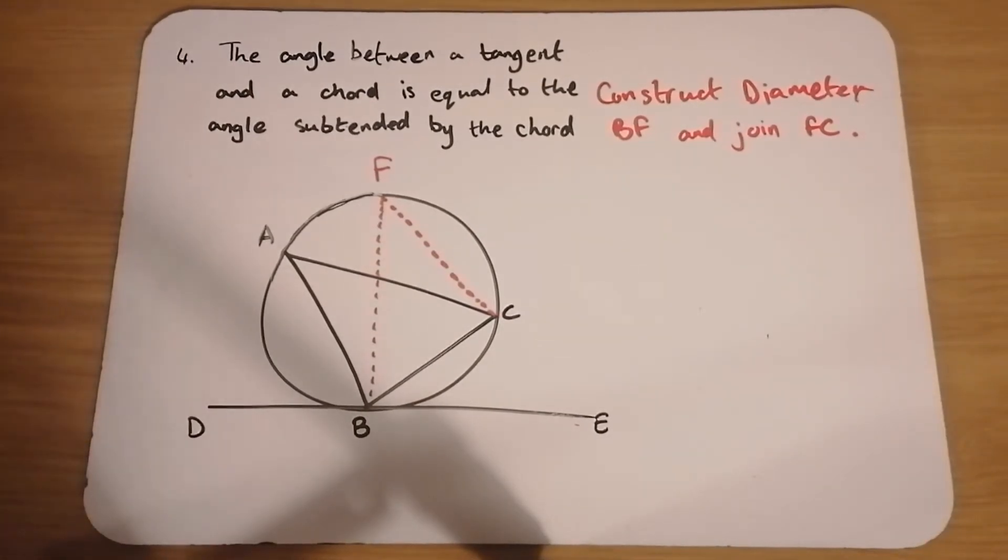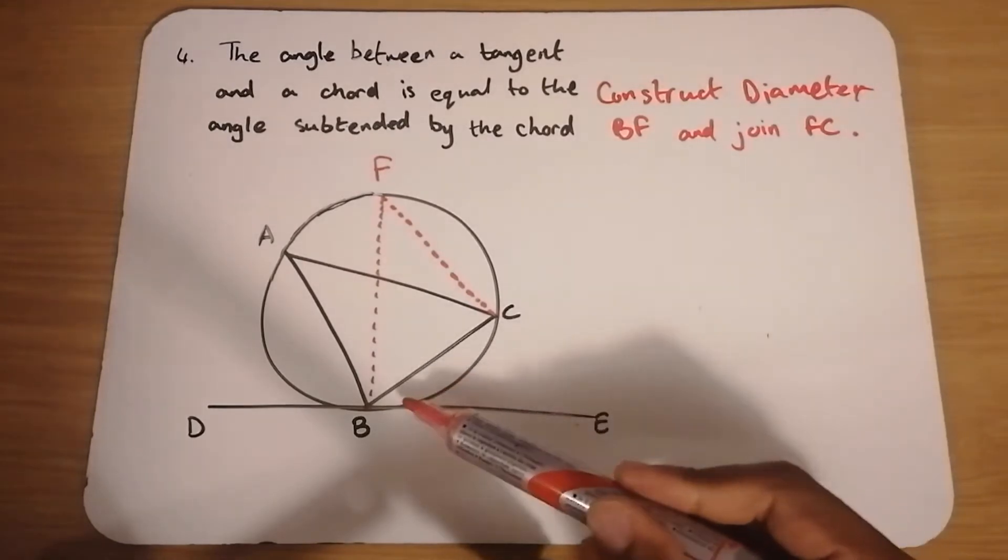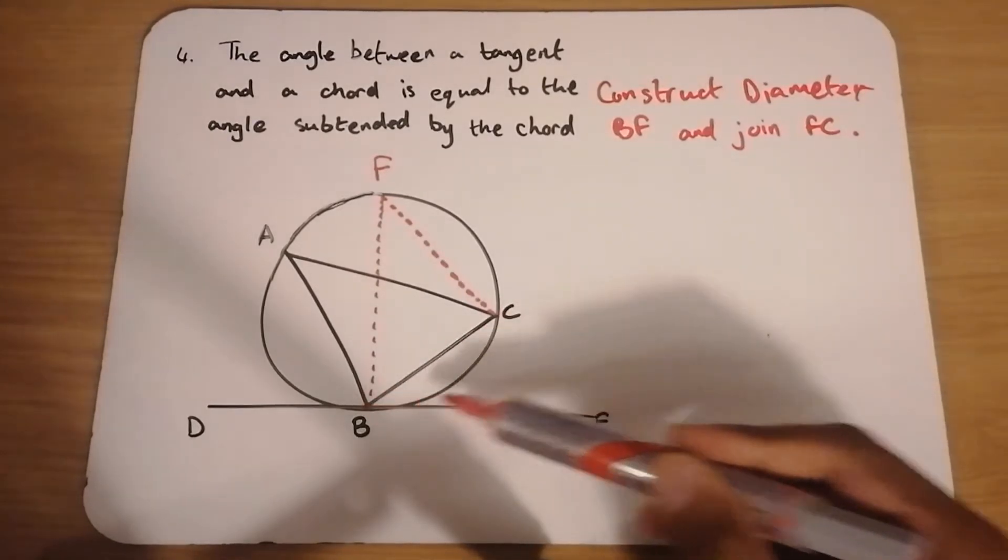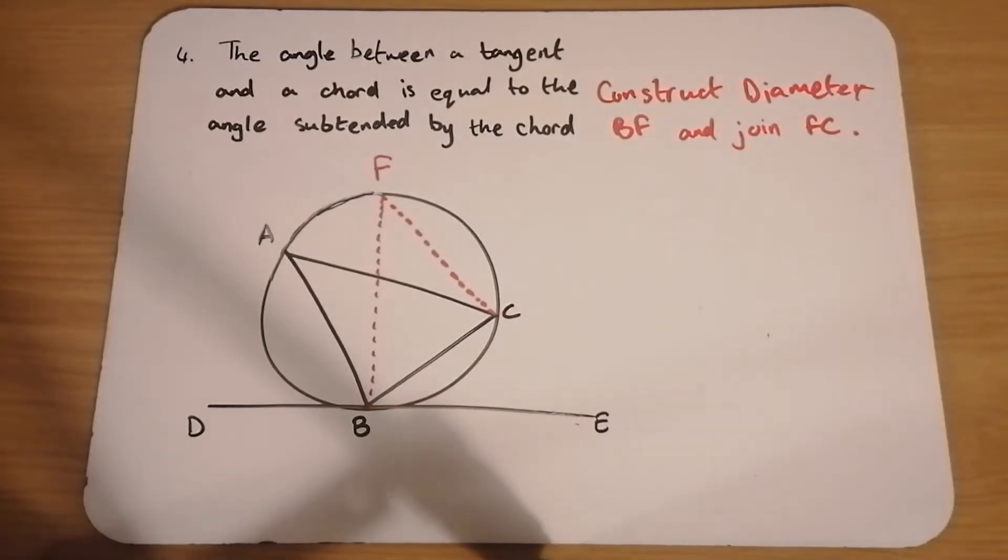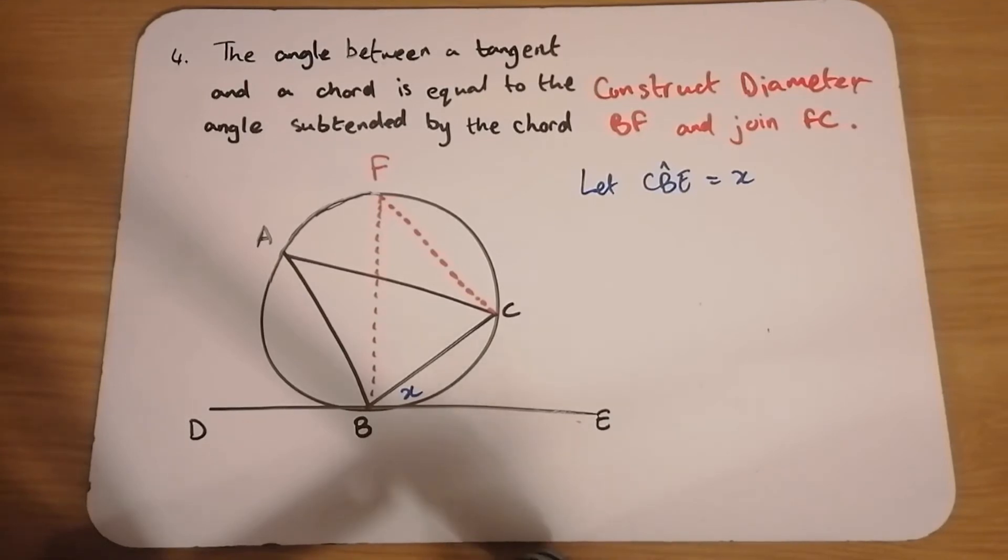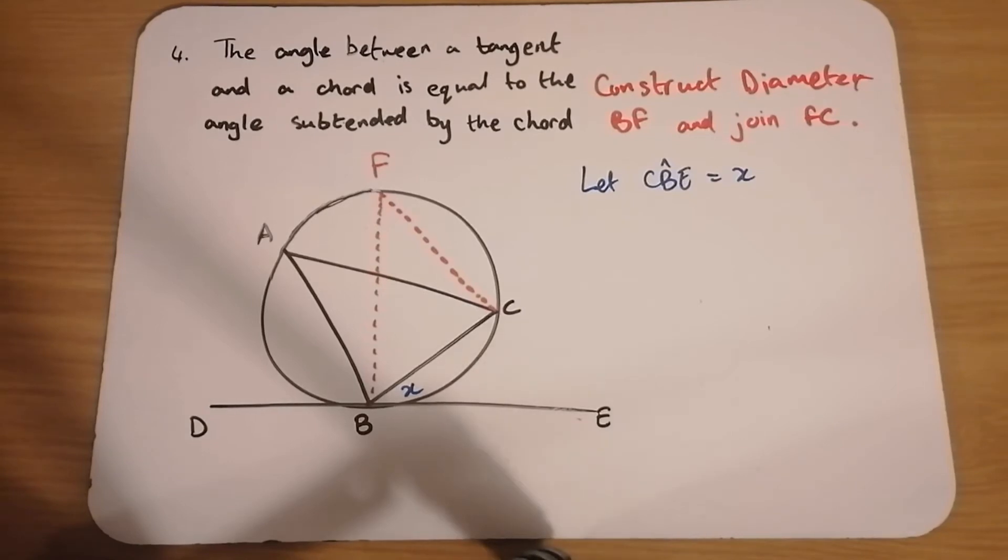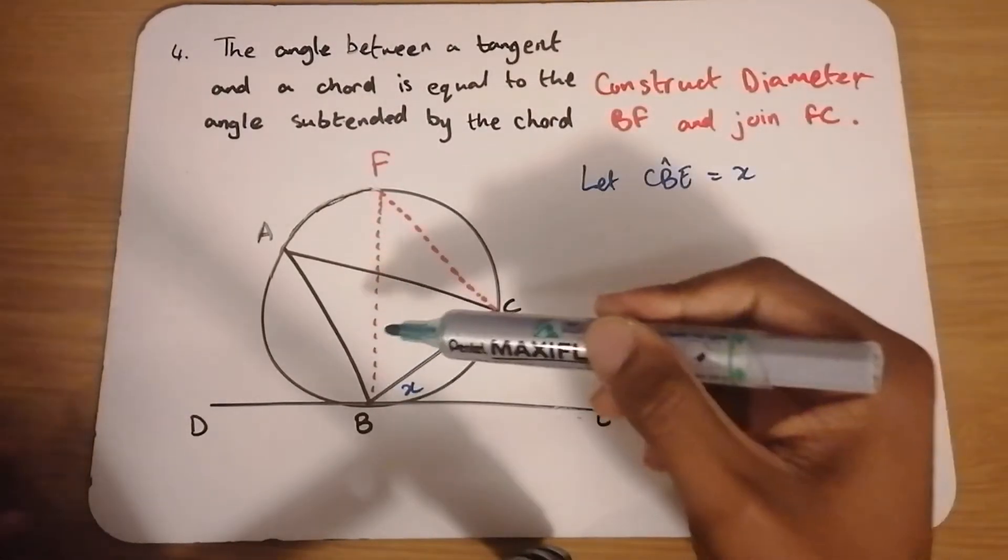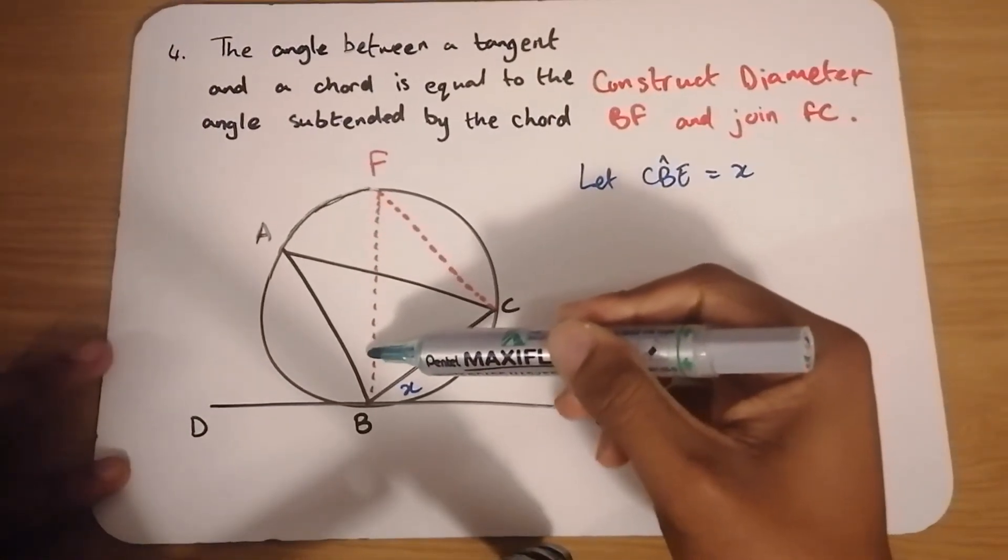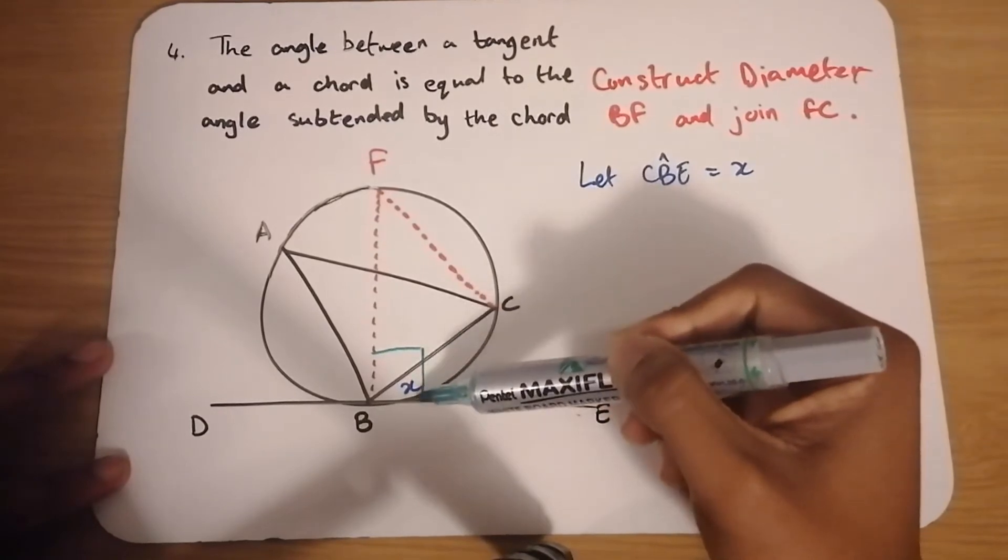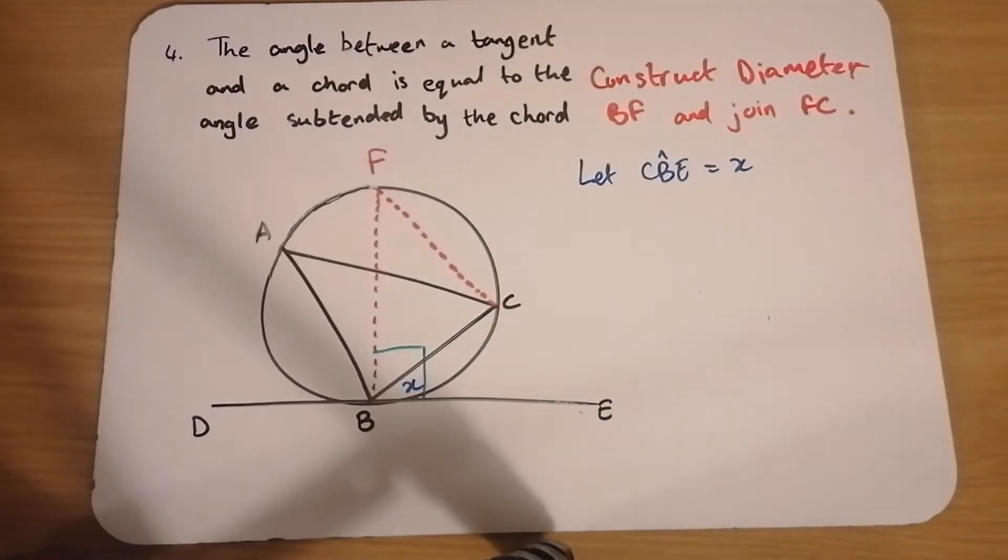And we'll start again by labeling this angle here, angle CBE. We'll label that X. Now the construction of the diameter is important for two reasons. The first reason is the diameter is always perpendicular to the tangent. So we have a 90 degree angle formed there.